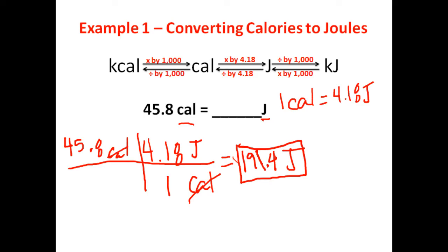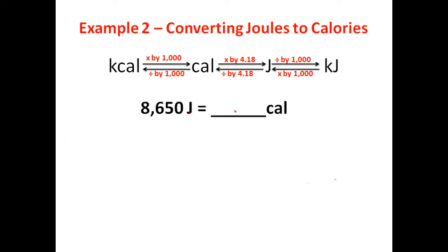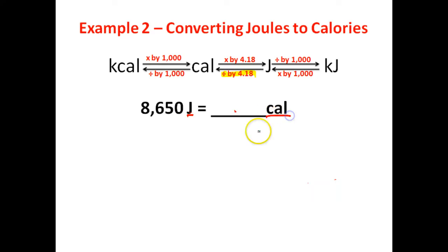Let's take a look at the next example. In this example, we're going to do the exact opposite — we are going to convert joules to calories. So if you take a look at this flow diagram here, we are going to convert joules to calories. It looks like the only thing we're really going to need to do is divide by 4.18. But let's take a look at why. So we're starting off with joules and we want to convert to calories. Let's go ahead and set this up.